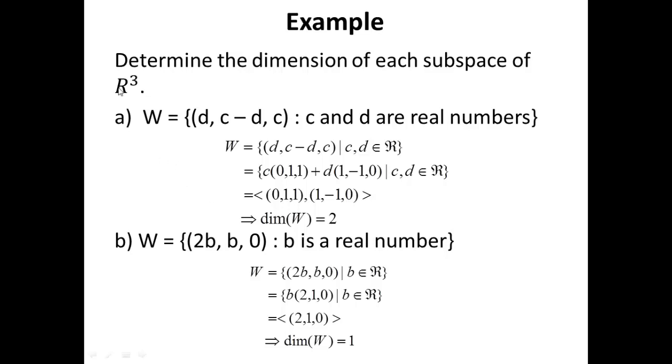For example, here the vector space R3, its dimension is 3. Because remember the standard basis has three vectors, (1,0,0), (0,1,0), (0,0,1). So the dimension is 3. But does that mean that every subspace of R3 must also have dimension 3? No.